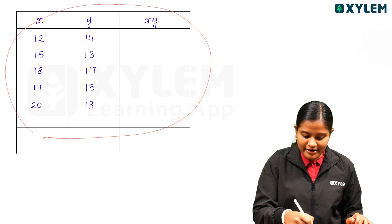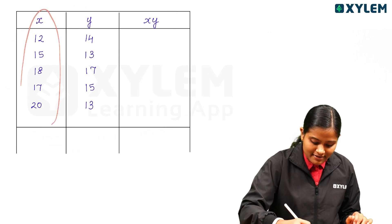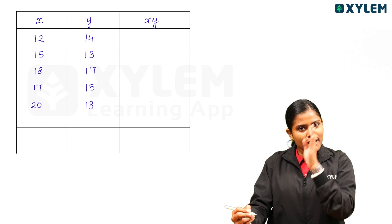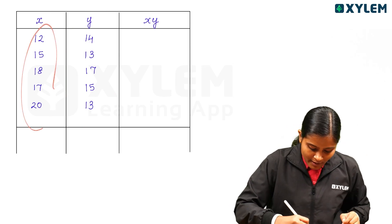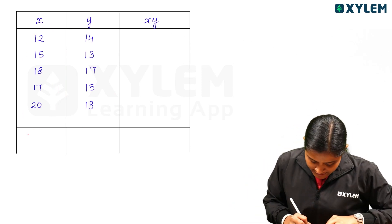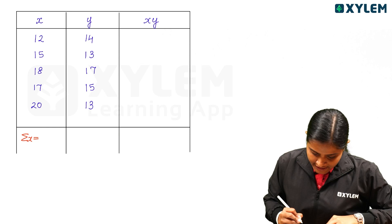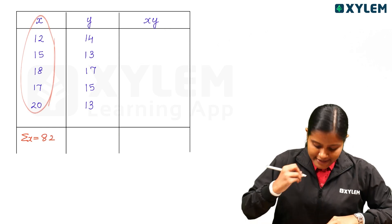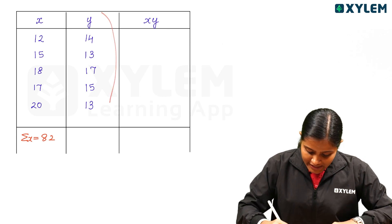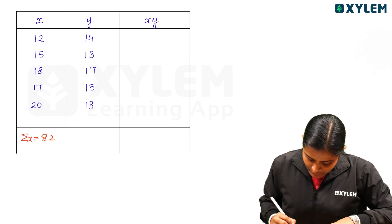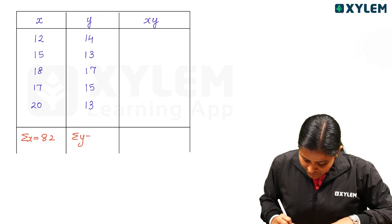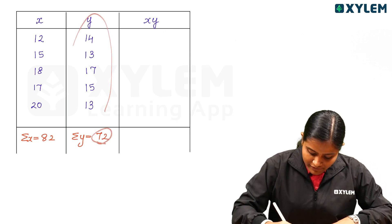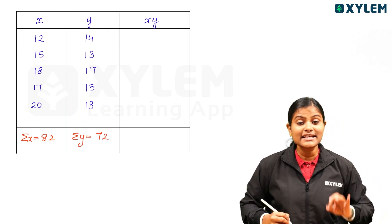We have a table here with X and Y values. Adding all the X values, we get summation x equal to 82. Adding all the Y values, we get summation y equal to 72.